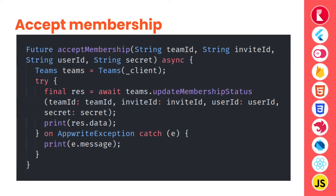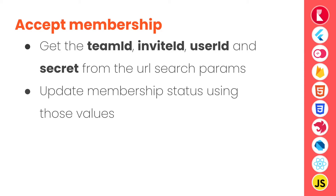Once we receive the invitation URL, we receive URL parameters including team ID, invite ID, user ID, and secret. Using these values we can call update membership status to accept the user into the team. This function gets the team ID, invite ID, user ID, and secret from the URL search parameters and then updates the membership status to add the new member to the team.